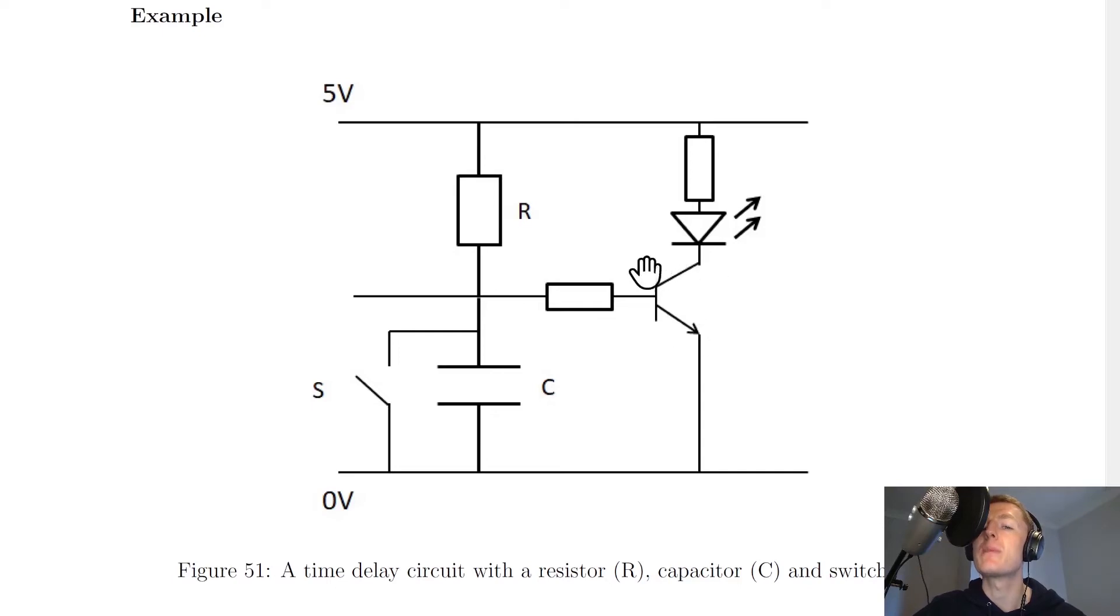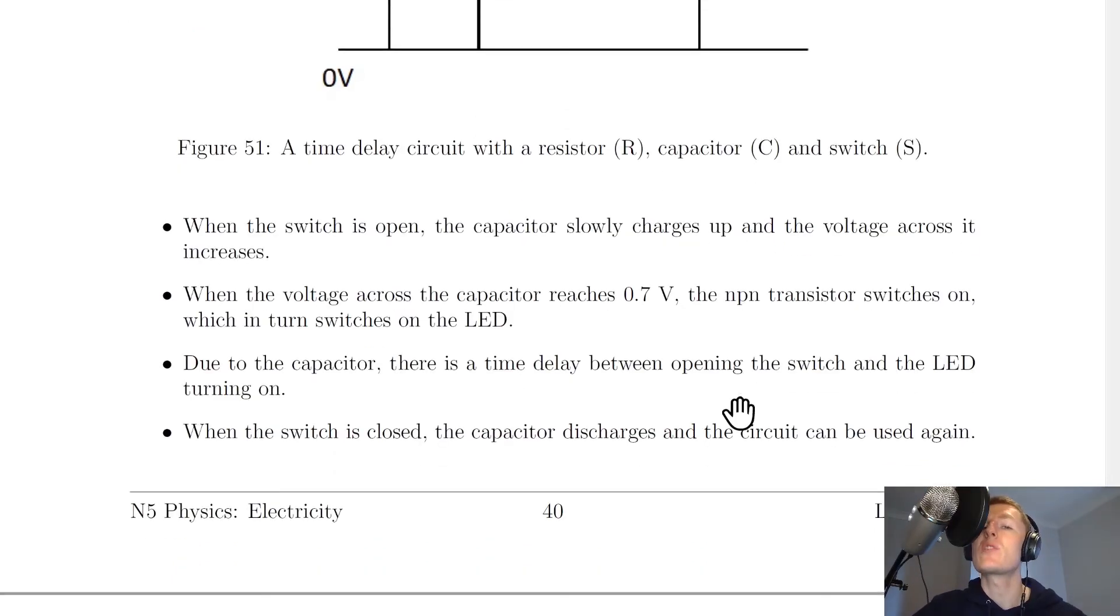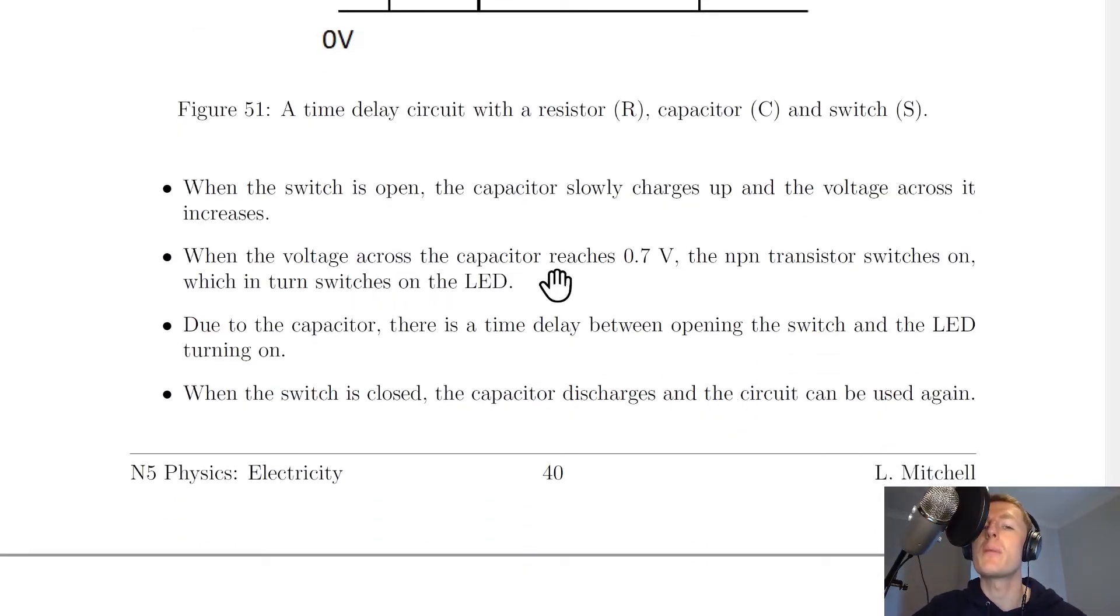And when that voltage reaches the NPN transistor switch on voltage about 0.7 volts, then that will switch on turning on the LED. And that's what it says here. So when the voltage across the capacitor reaches 0.7 volts, the NPN transistor switches on, which in turn switches on the LED.